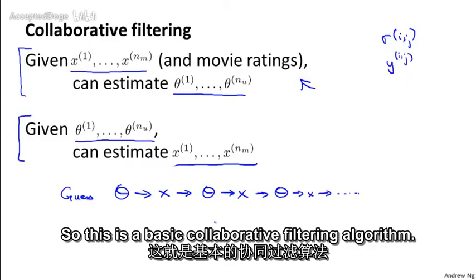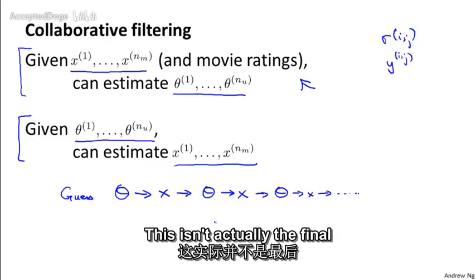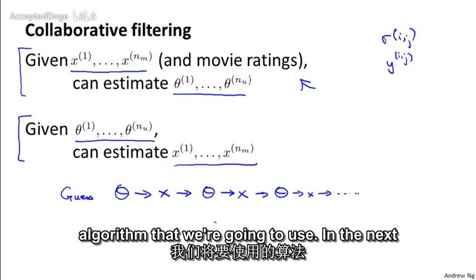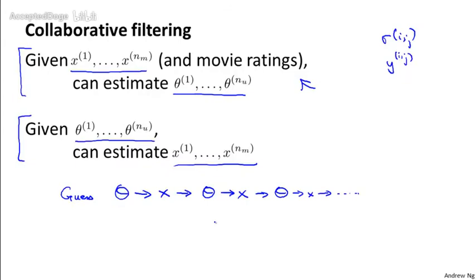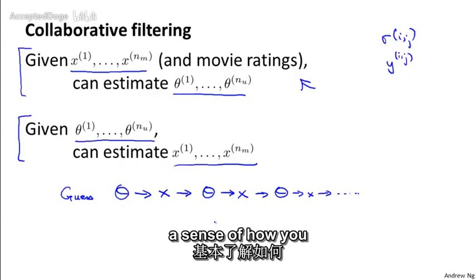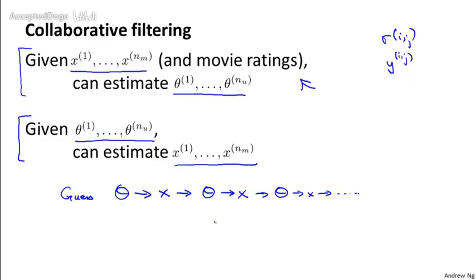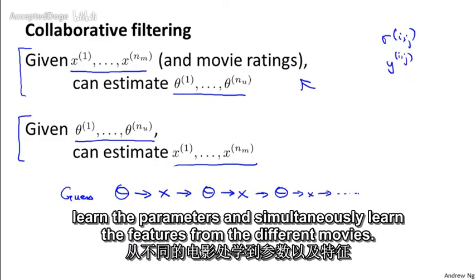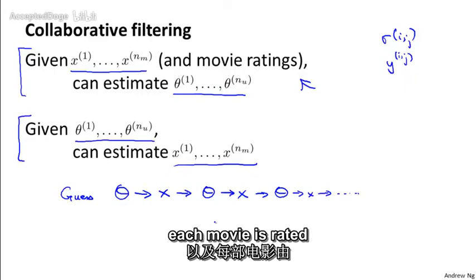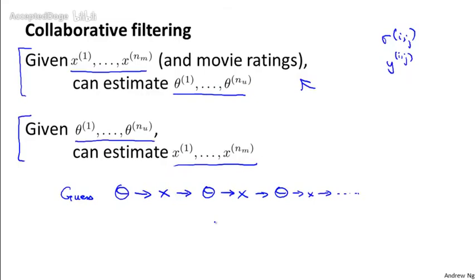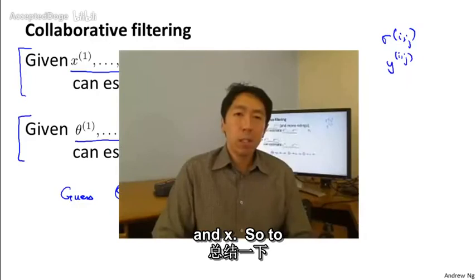So this is a basic collaborative filtering algorithm. This isn't actually the final algorithm that we're going to use. In the next video, we're going to be able to improve on this algorithm and make it quite a bit more computationally efficient. But hopefully this gives you a sense of how you can formulate a problem where you can simultaneously learn the parameters and simultaneously learn the features for the different movies. And for this problem, for the recommendation system problem, this is possible only because each user rates multiple movies and hopefully each movie is rated by multiple users. And so you can do this back and forth process to estimate theta and x.